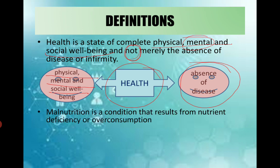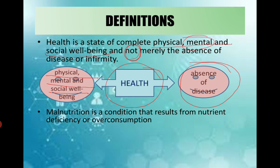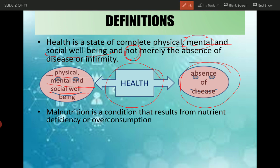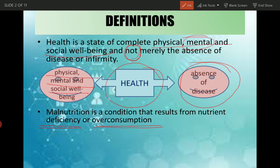The next definition we have to cover is malnutrition. Malnutrition is a condition that results from nutrient deficiency or overconsumption. It is both deficiency and overconsumption, not just one. So we can have a nutrient which is less or more.